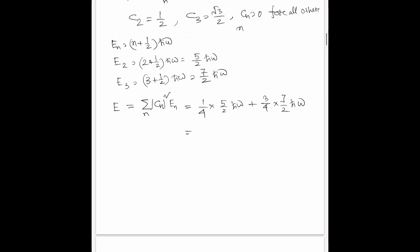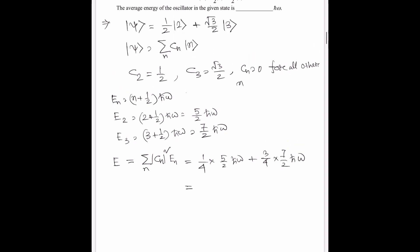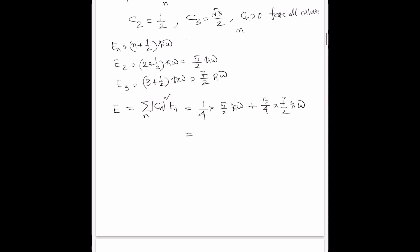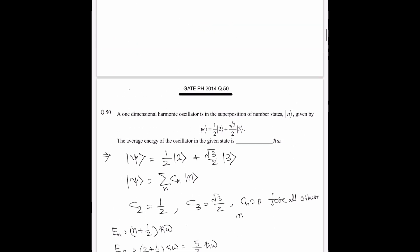Ultimately, because the state is already normalized, we don't need to normalize it. So it is 5/8 ℏω plus 21/8 ℏω, that is 26/8 ℏω. This is 13/4 ℏω. So in units of ℏω, the answer will be 3.25.